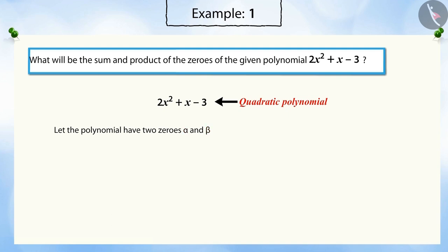In the previous video, we learned that the sum of the zeros of a quadratic polynomial is the negative ratio of the coefficient of x to the coefficient of x². Substituting the values of the coefficients gives the sum of the zeros as -1/2.